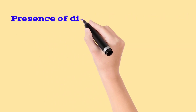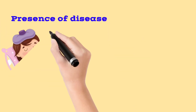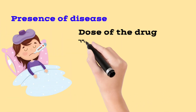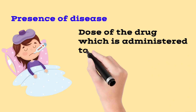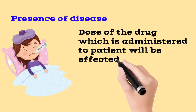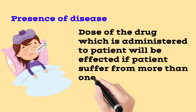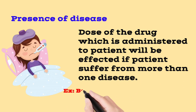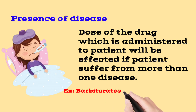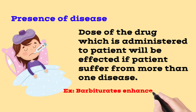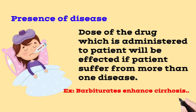The next factor is the presence of disease. If a patient has a disease, it can change the dose required. For example, barbiturates and chlorpromazine can prolong effects in cirrhosis and liver disease. Diseases like liver disease affect drug metabolism and therefore influence the dose.